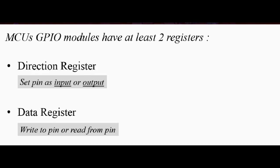One register is known as the direction register. This register is used to set that pin either as input or output. And the other register is known as the data register. This register is used to write to the pin or read from the pin.